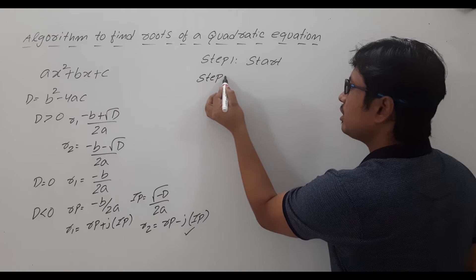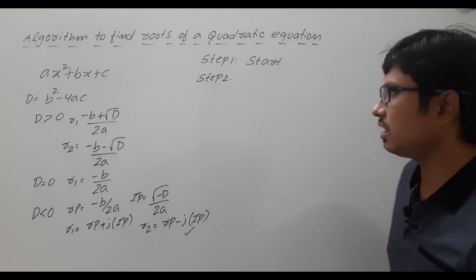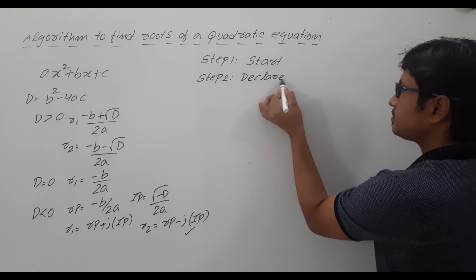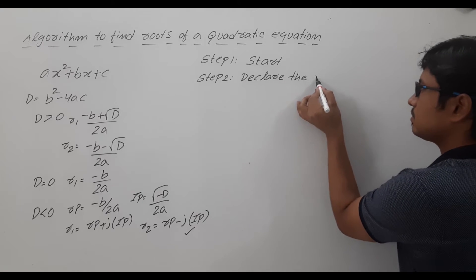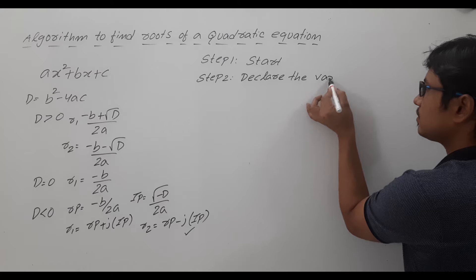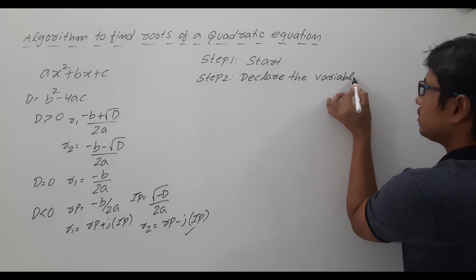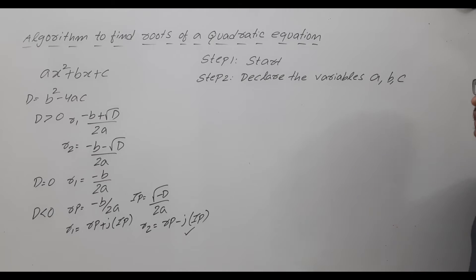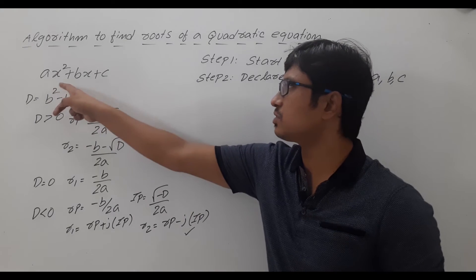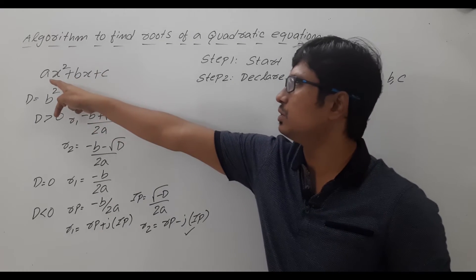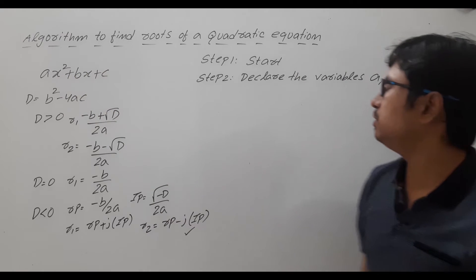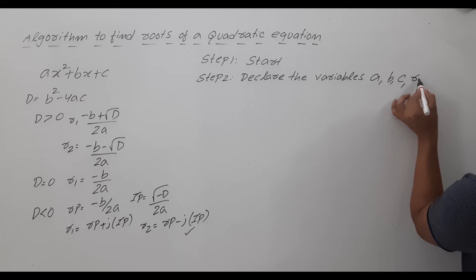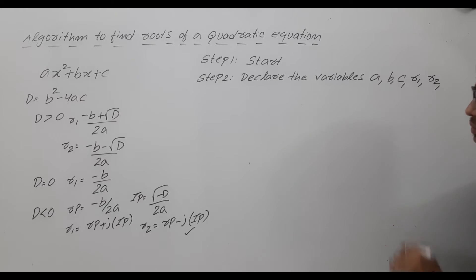Any algorithm will start with step 1: Start. Step 2 is to declare the variables we will use in the algorithm. The variables are: a, b, c are the inputs — because the equation is ax² + bx + c. Then we have variables r1 and r2 which are the roots.